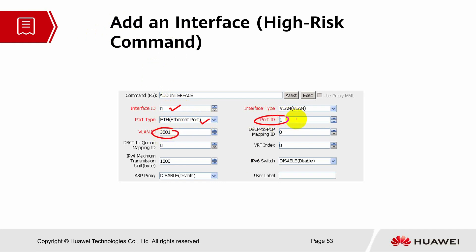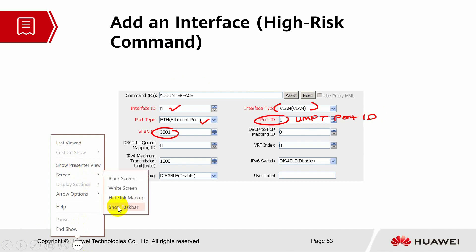This port ID we have to follow the UMPT port. So if you're using port ID 0 then it will be 0; if it's port ID 1 then it is 1. It will actually state the information of the cabinet, sub-rack, and so on, and the interface type is VLAN. Let's see whether we have the new model in our base stations.